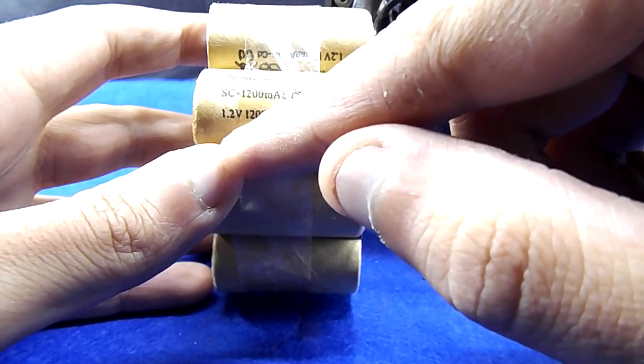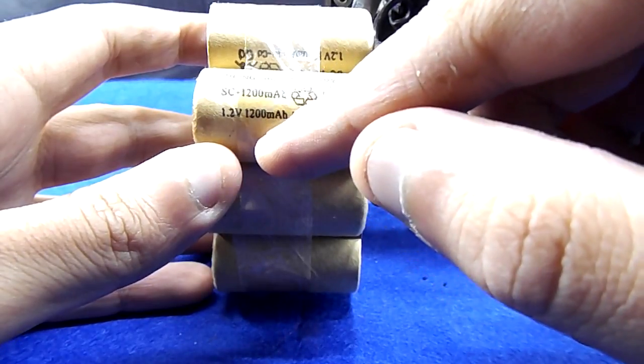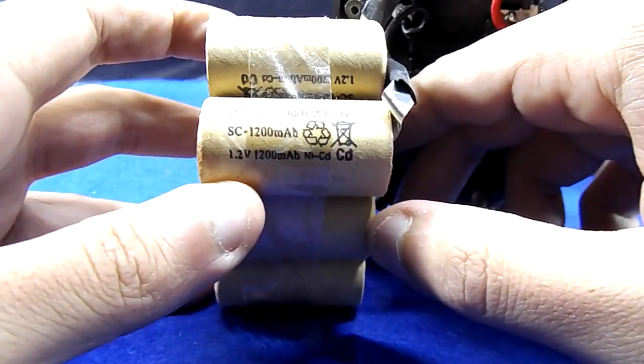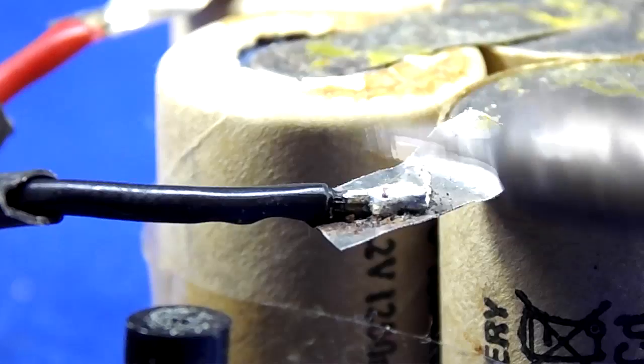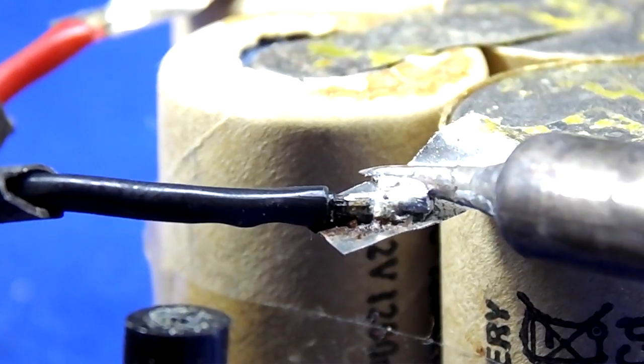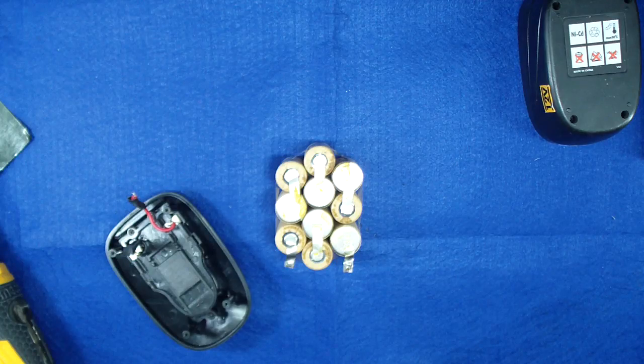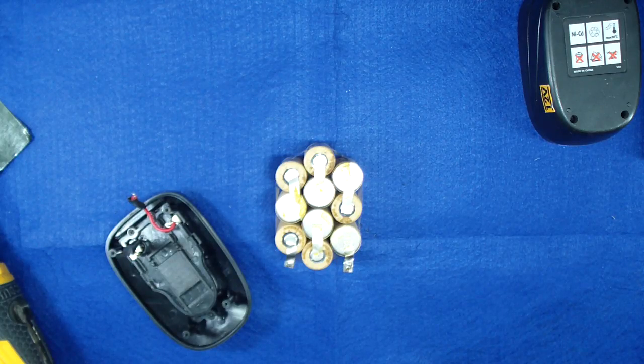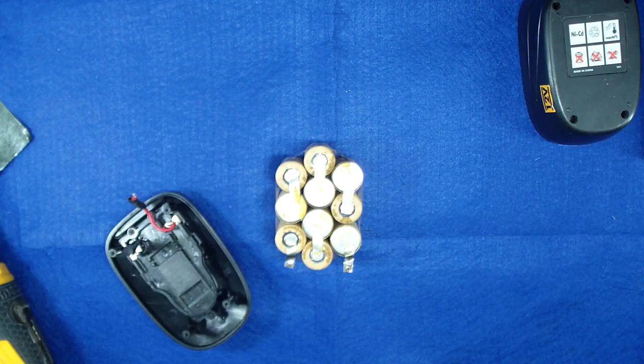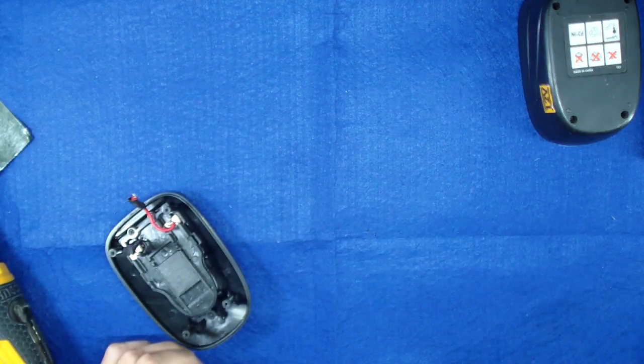Each battery can provide 1.2 volts and 1.2 amps. Now I will just remove them. We have an empty battery enclosure here, and I'm going to rebuild the battery pack inside it.